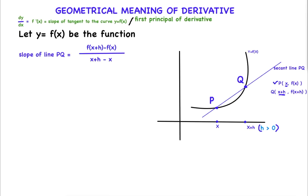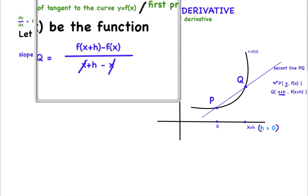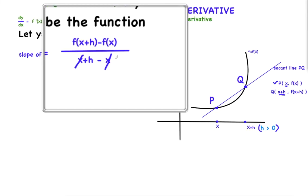What is the slope of line PQ? In geometry, the slope formula is y2 minus y1 divided by x2 minus x1. Taking P as (x1, y1) and Q as (x2, y2), the slope is f of x plus h minus f of x divided by x plus h minus x. Since x plus h minus x equals h, the slope of PQ is f of x plus h minus f of x divided by h.